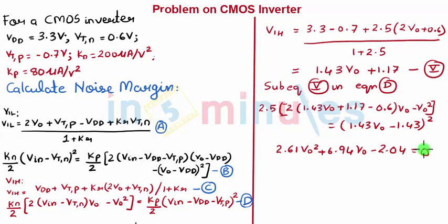So when my VIN is equal to VIH, my Vout which gives me a correct value is nothing but 0.27 volts. From this we can easily calculate the value of VIH.